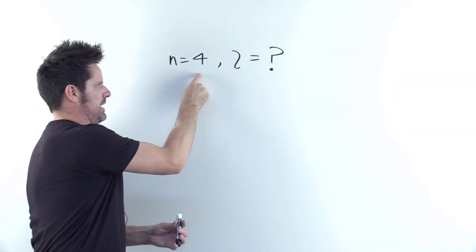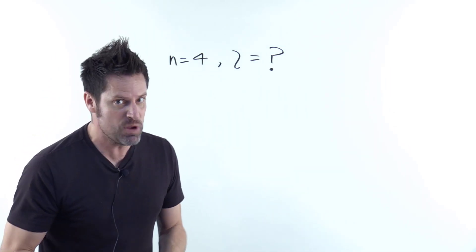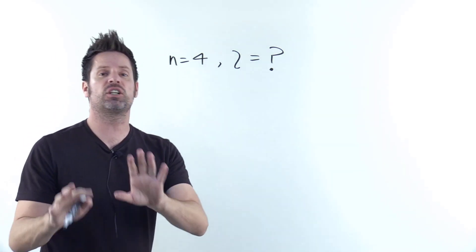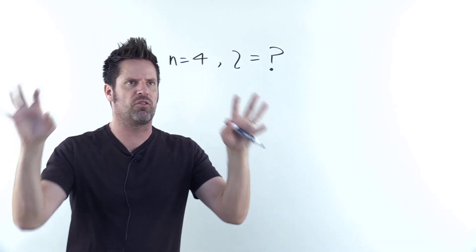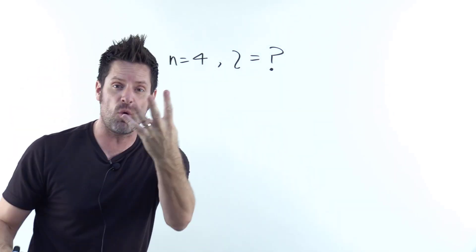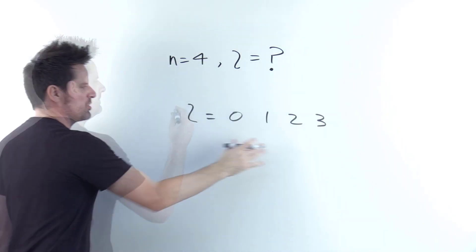If our principal quantum number n equals 4, then what are the possible azimuthal quantum numbers l? This is actually a lot easier than you might think. So as I explained in an earlier video, link in the description below or floating over my head somewhere, there are only four possible values for l. Those four right there.